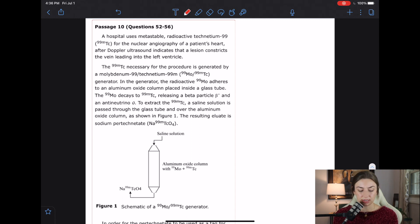The 99 TC necessary for the procedure is generated by a molybdenum-technetium 99M generator. This passage making me look like a fool. I cannot pronounce these words. In the generator, the radioactive 99 MO adheres to an aluminum oxide column placed inside a glass tube. The 99 MO decays to 99 MTC, releasing a beta particle, beta minus, and an anti-neutrino. So I'm getting a little lost. I'm going to flowchart something that I noticed. It said that the 99 MO decays to the 99 MTC and releases a beta minus particle in the process.